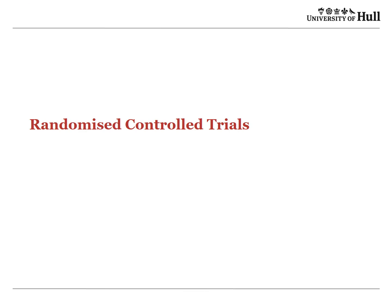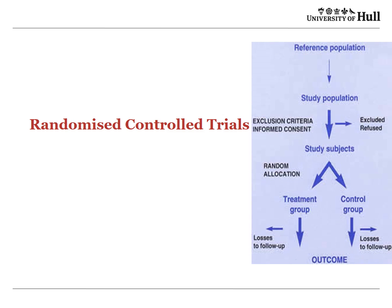Let's take a look at randomised controlled trials. A diagram summarises this nicely: you have a reference population from which you take a study population, and then you have your study subjects — the ones who agree to come into your study, usually called participants. They'll be allocated randomly to a treatment group and a control group, and then an outcome will be measured. We need to follow how many people don't make it through to the end of the trial.